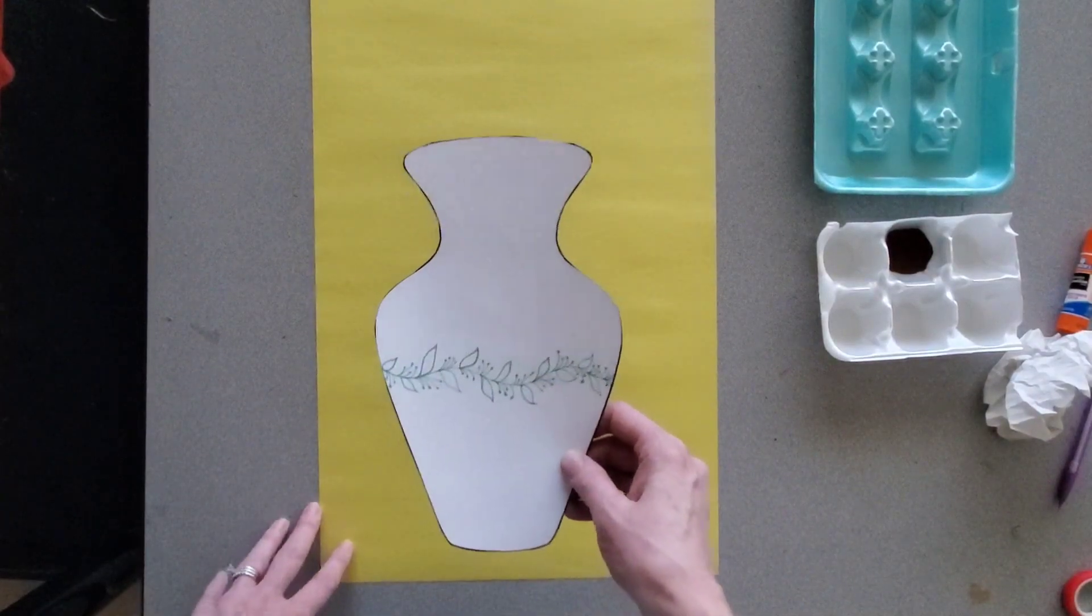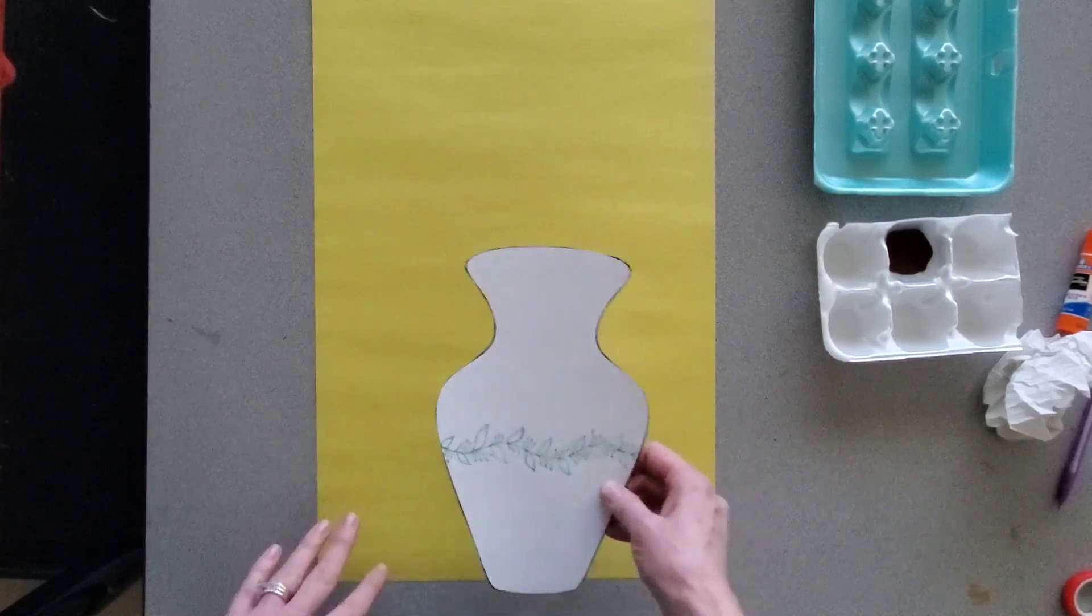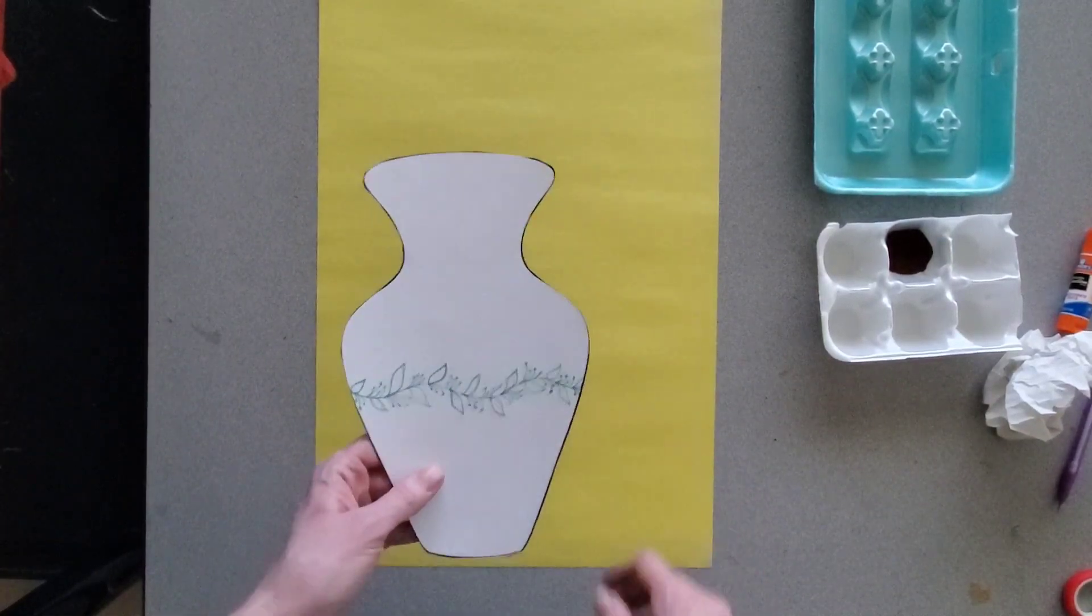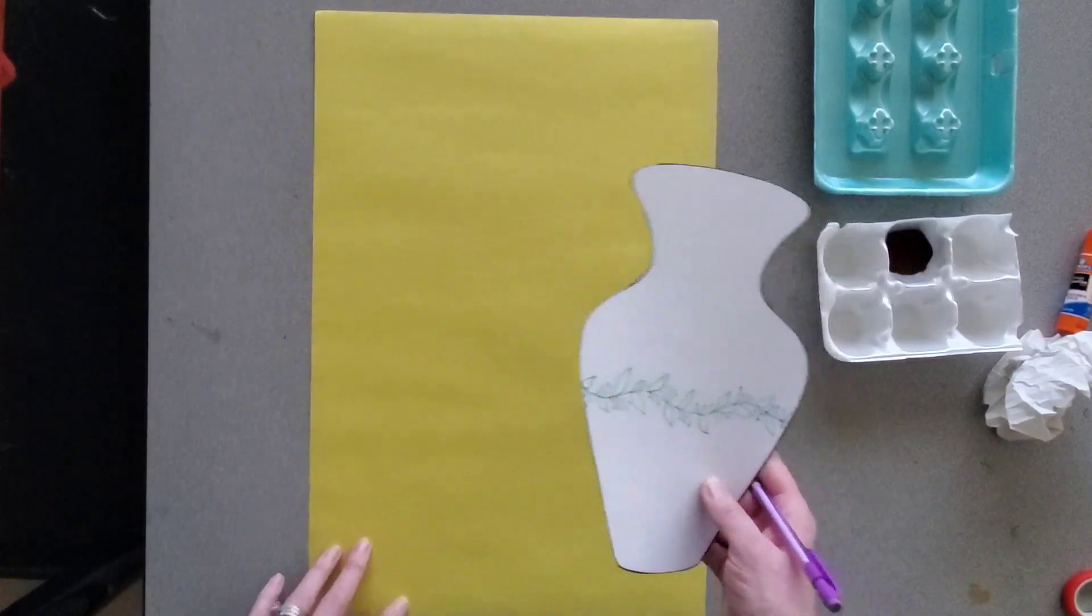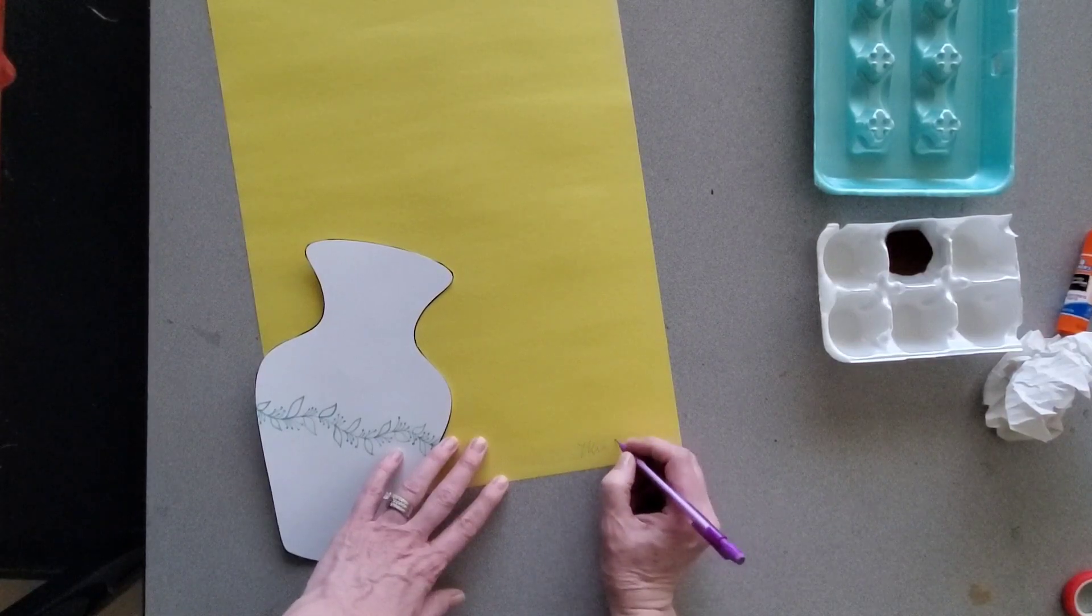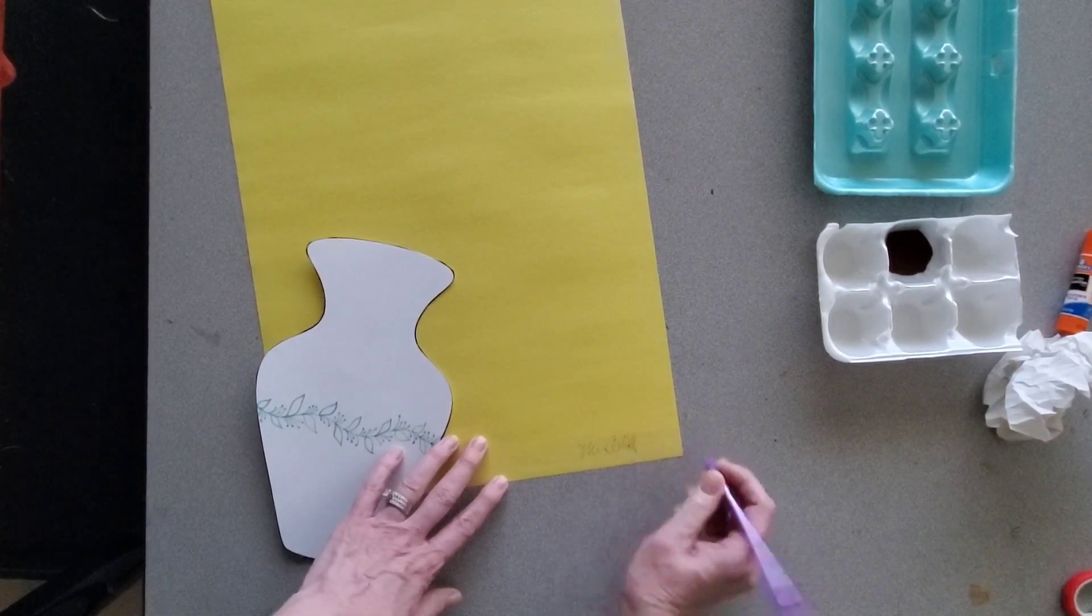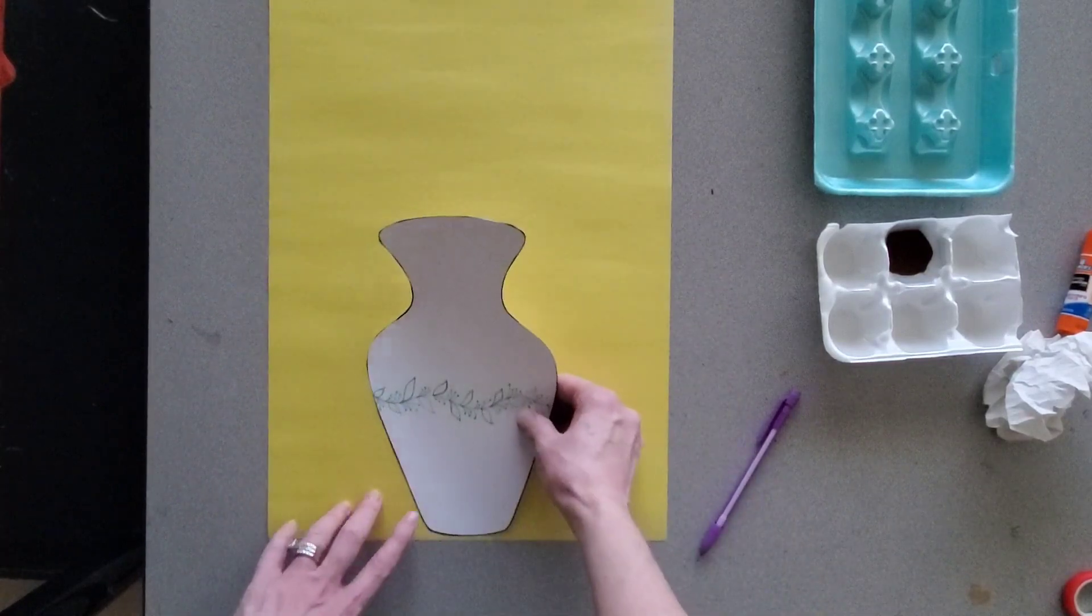Before we start painting, we are going to cut out our vase so we have placement of the branches. We have a yellow piece of paper today. You need to put your name on it first - you can put it on the back if you'd like. I put mine down in the corner.